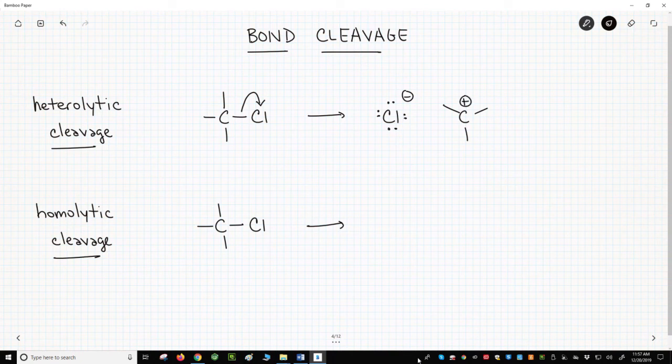We broke a bond through something called a heterolytic cleavage. In a heterolytic cleavage, electrons move together in pairs. We broke the C-Cl bond by moving both electrons in the sigma bond together to the chlorine.